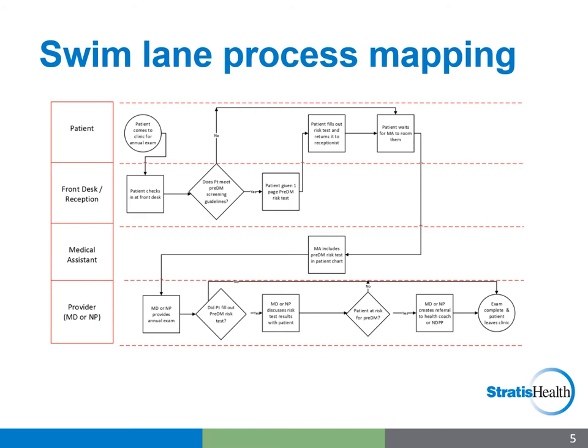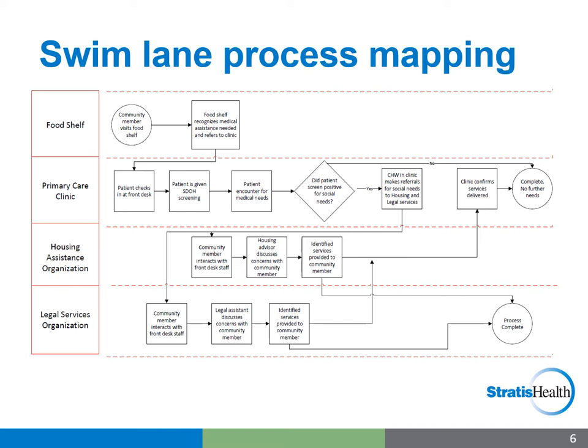In this second swimlane process map example, which we'll create together in just a few minutes, we zoom out and are now using the same set of tools and techniques to depict a process that takes place across multiple organizations — a food shelf, a primary care clinic, a housing assistance organization, and a legal services organization. At this level we are concerned about how multiple organizations in a community interact to complete the multi-stakeholder process of screening and referring patients and community members to one another.